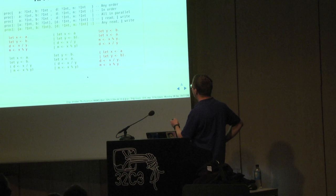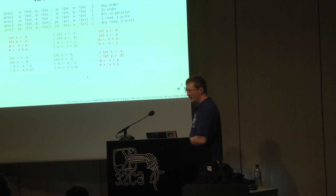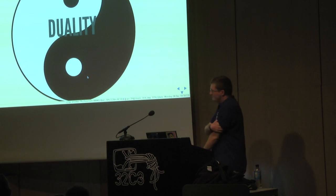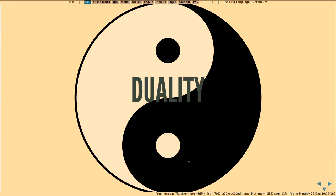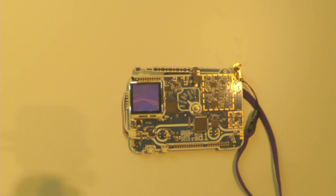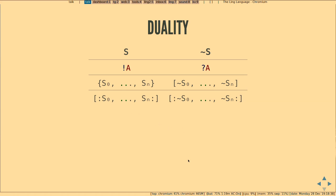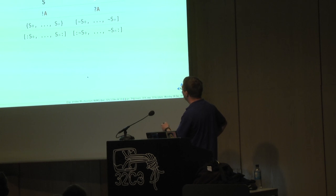What we should take from this is the different choices we have: any order, strictly left to right, and all in parallel. Now, duality. We've been thinking of these channels a bit like memory, but let's think of them as a protocol. If I am writing an int, then the other side should be ready to receive an int — so there is this duality. This duality also works with array, struct, or tuple types. If one side has the choice of processing order, the other side has absolutely no choice. If we have a session s, its dual is written with tilde. If we send an A, the dual is to receive an A.